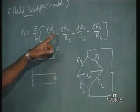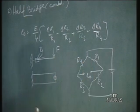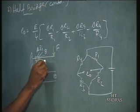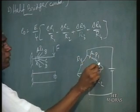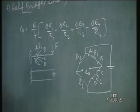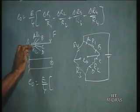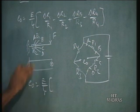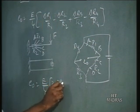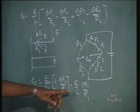Opposite polarity means you should connect to adjacent arms. For R1, adjacent arms are R2 or R4. So we will connect the second gauge as R2. Call these terminals AB for R1 and CD for R2. Accordingly, you connect it in the bridge and the voltage output is equal to E/4 × ΔR1/R1. Since tensile and compressive strains are equal in magnitude but opposite in polarity, it becomes twice — so EO = E/2 × ΔR1/R1. This is twice the sensitivity of the quarter bridge.